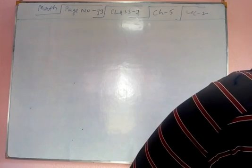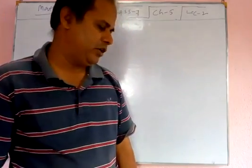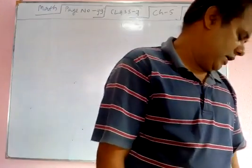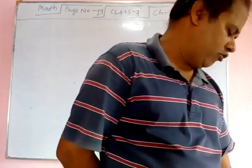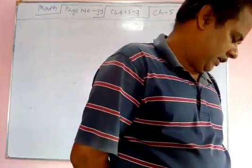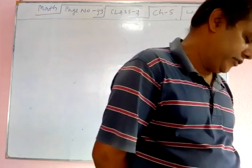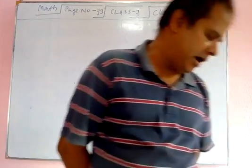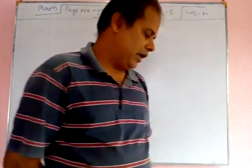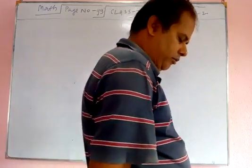A polynomial of degree 1 is called a linear polynomial. A polynomial of degree 2 is called a quadratic polynomial. A polynomial of degree 3 is called a cubic polynomial. A non-zero constant polynomial is a polynomial of degree 0; for example, 5 equals 5 times x to the power 0.